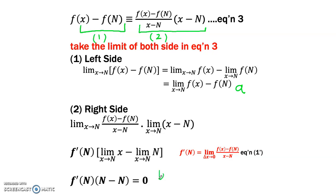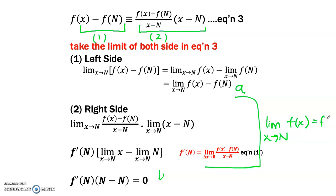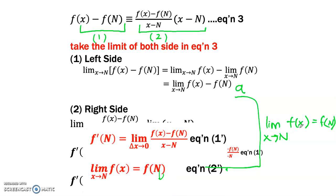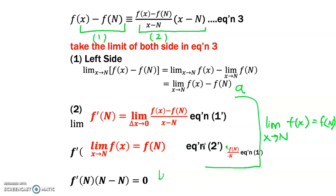Equating the left side and right side, we have: the limit as x approaches n of f(x) equals f(n), because the limit of f(x) as x approaches n minus f(n) equals 0. This form is actually the same as the continuity condition, equation 2 prime. Thus, we have proven that continuity follows from differentiability. In general, if a function is differentiable at every point in its domain, we may conclude that it must be continuous in its domain.